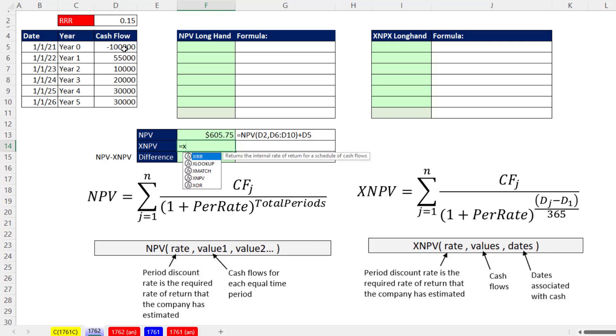With XNPV, we have our required rate of return, and the values, those are the cash flows, including time zero. And then the dates, close parentheses, and Enter.